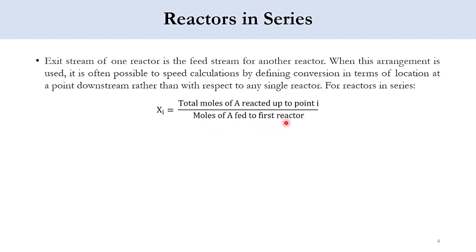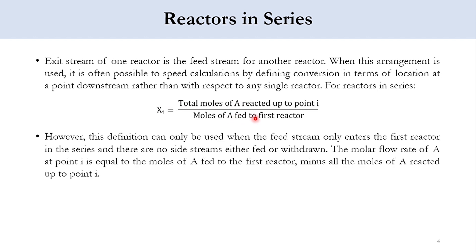For example, with three reactors, X3 is the conversion obtained through the third reactor, and FA3 is the molar flow rate of A at the outlet of the third reactor. So X3 = (FA0 - FA3) / FA0. This formula can only be used when there are no side streams — no intermediate feeds or withdrawals.